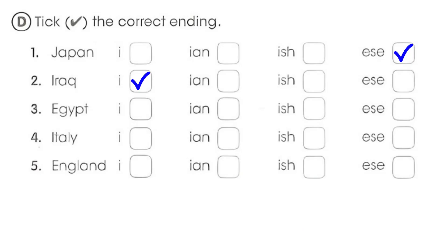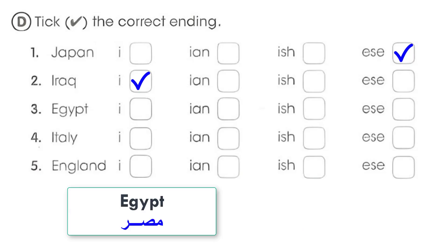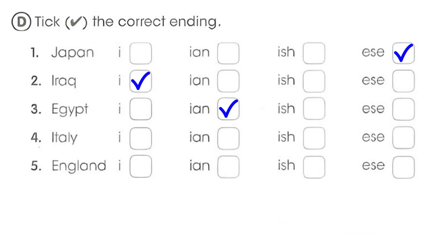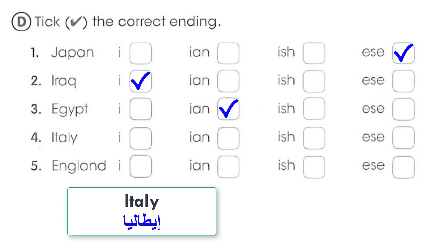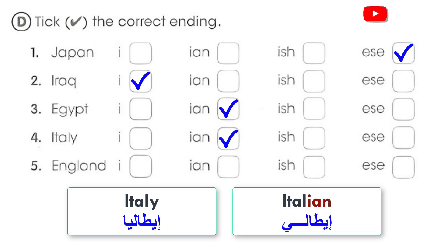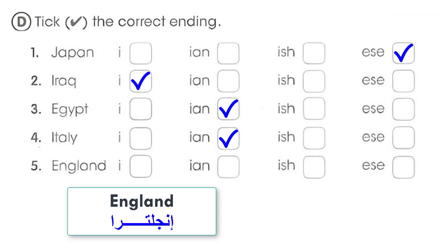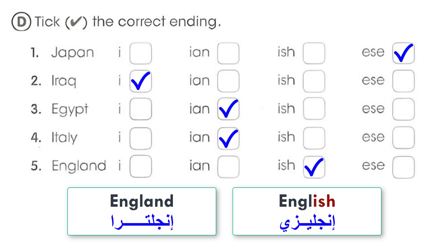3. Egypt مصر → Egyptian مصري. 4. Italy إيطاليا → Italian. 5. England إنجلترا → English إنجليزي.